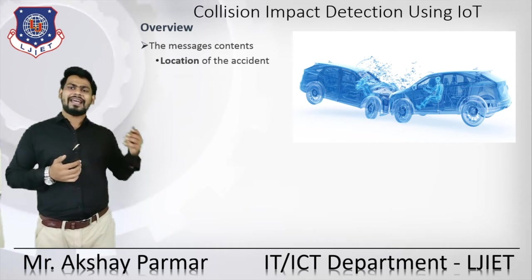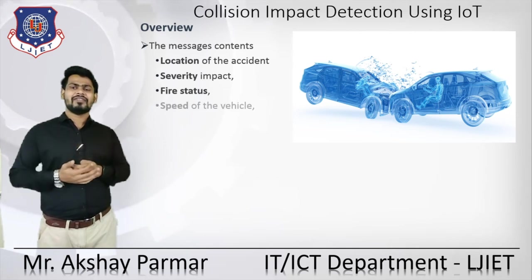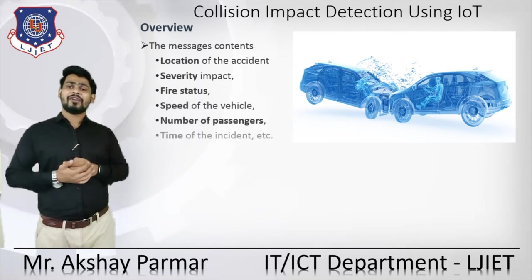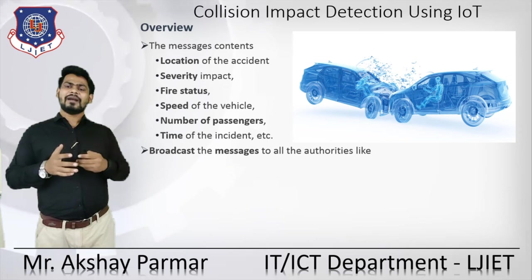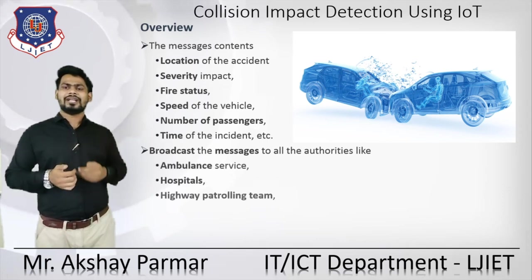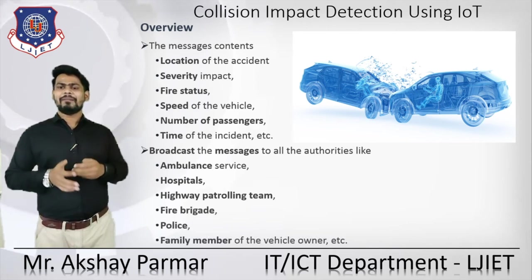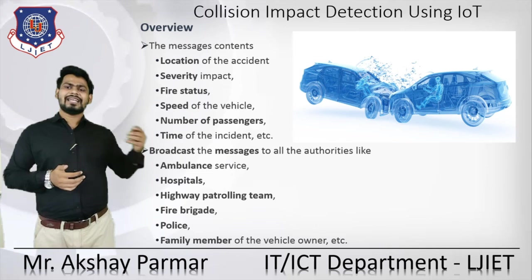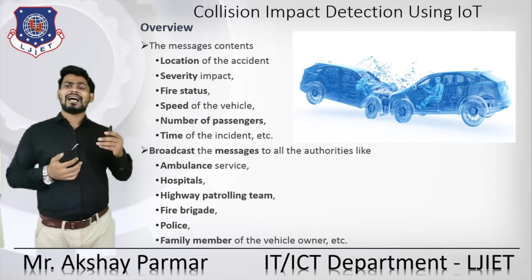The alert message contains the location of the accident, the severity impact, fire status, speed of the vehicle, number of passengers, time of the incident, and all kinds of relevant data. After that, we broadcast the message to all authorities — ambulance service, hospitals, highway patrolling teams, fire brigade, police, and family members of the vehicle owner. We can send that message to all stakeholders connected with that car and owner.